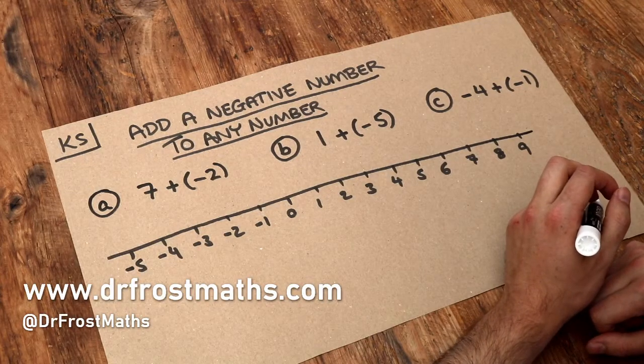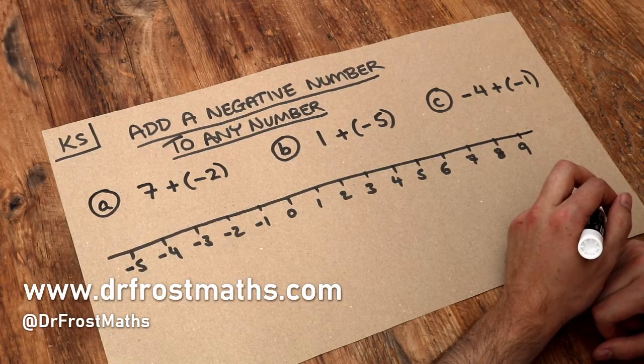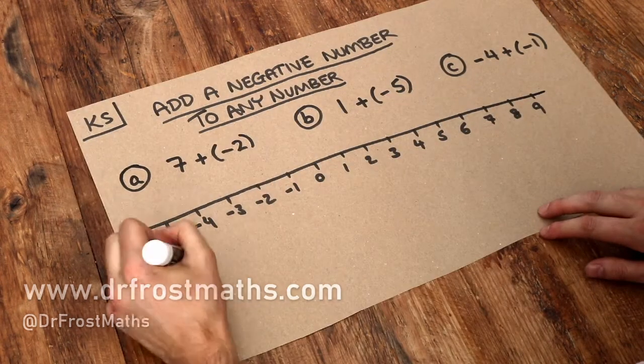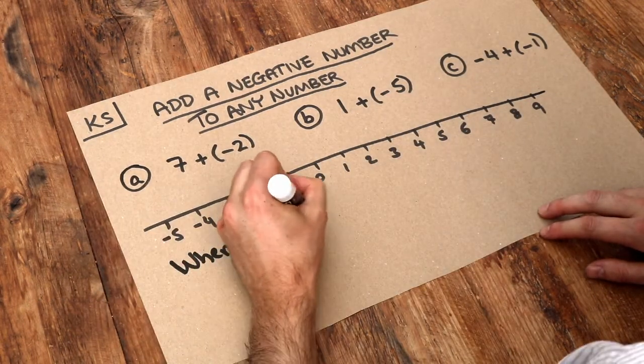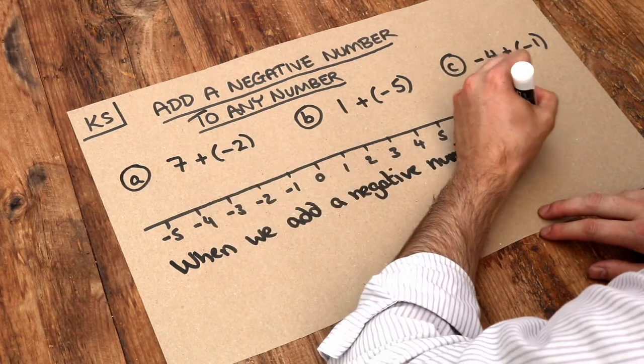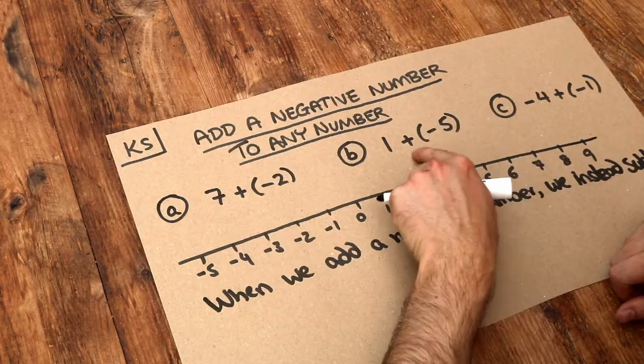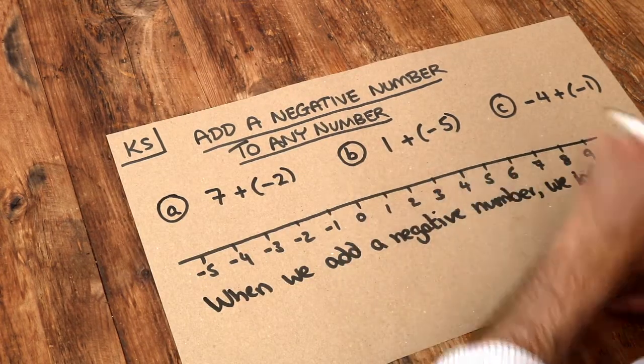Hello and welcome to this Dr. Frost Maths key skill video on adding a negative number to any number. The only thing you have to remember is that when we add a negative number, we instead subtract. So we actually end up moving down the number line, when usually when we add a number, we end up moving up the number line.